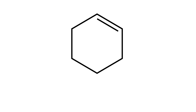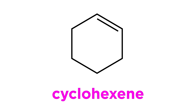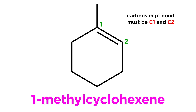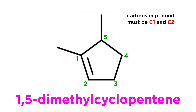Finally, cyclic alkenes will also be pretty easy to name. If there are no substituents, we don't even have to list the position of the double bond, as it's arbitrary — so this is cyclohexene. If substituents are present, then the carbons participating in the pi bond will be carbons one and two, in whichever order gives the first substituent occurring soonest. So this is 1-methylcyclohexene, not two. This is 1,5-dimethylcyclopentene, not 2,3.